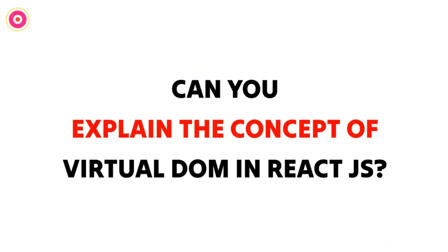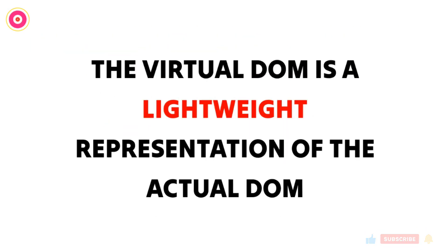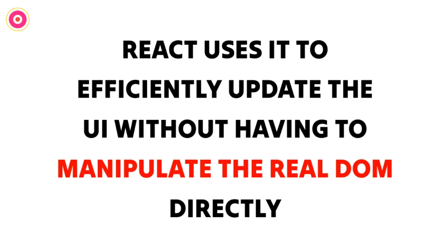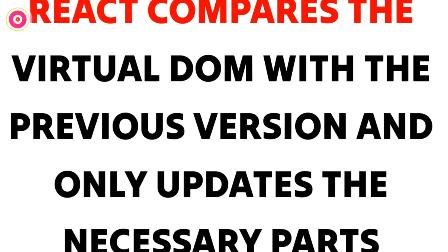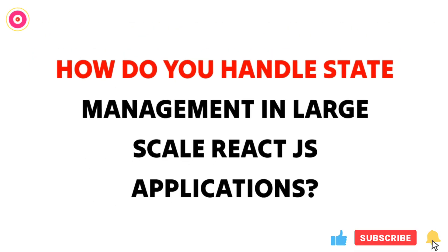Question three: can you explain the concept of virtual DOM in React JS? Sample answer: the virtual DOM is a lightweight representation of the actual DOM. React uses it to efficiently update the UI without having to manipulate the real DOM directly. When there is a change in the state or props of a component, React compares the virtual DOM with the previous version and only updates the necessary parts.